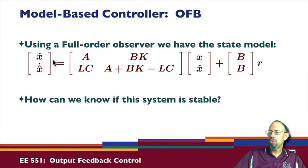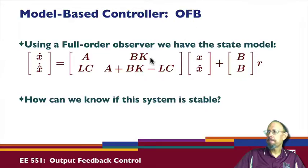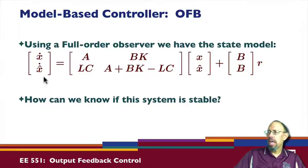Here's the overall state model we get using what's called a full-order observer. By 'full order' we mean the observer is of the same order as the system. Our model-based controller here is output feedback. We also have the output y = C*x, which corresponds to [C, 0] times the state vector, and we've added a new input r.